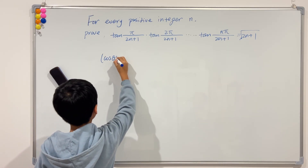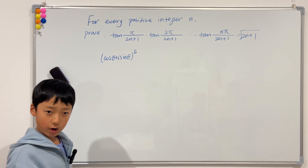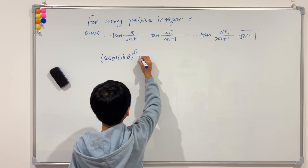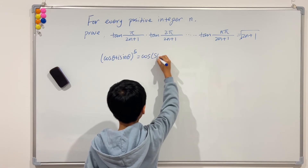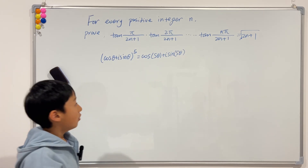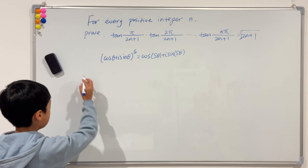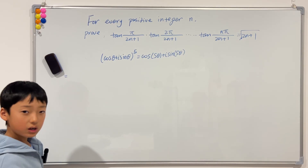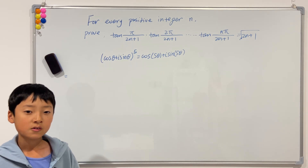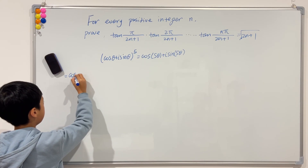We raise cosine theta plus i sine theta to the power of 5. If we expand this using De Moivre's theorem, we get cosine of 5 theta plus i sine of 5 theta. And if we expand this using the binomial expansion, the first term will be C(5,0) of cosine to the power of 5 theta. Of course, C(5,0) is just 1, so it will just be cosine to the 5th power of theta.